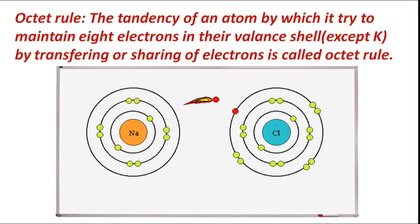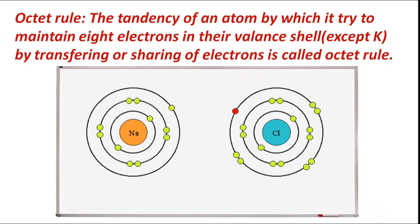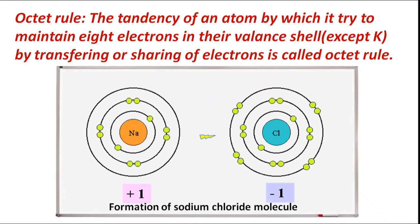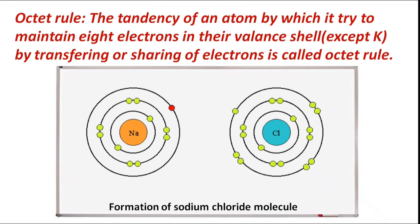Formation of sodium chloride: sodium has one electron in its valence shell, so it loses that electron. Chlorine has seven electrons in its valence shell, so it gains one electron. In this way, the formation of sodium chloride takes place, with both atoms completing their octet state.